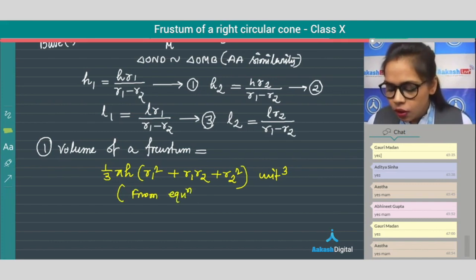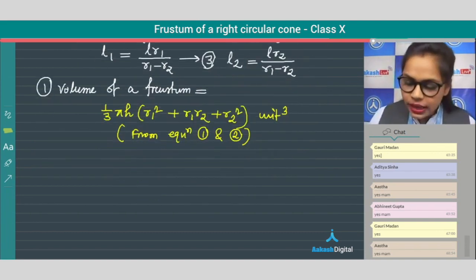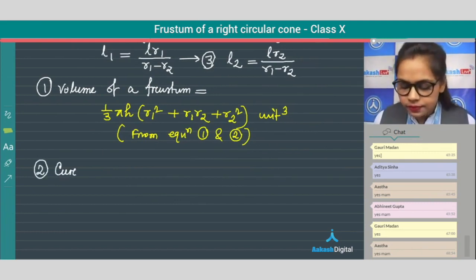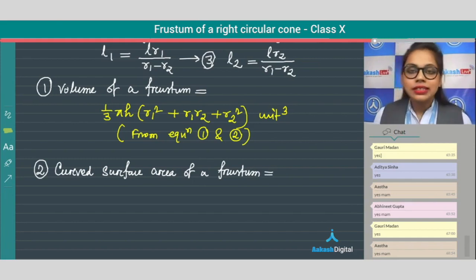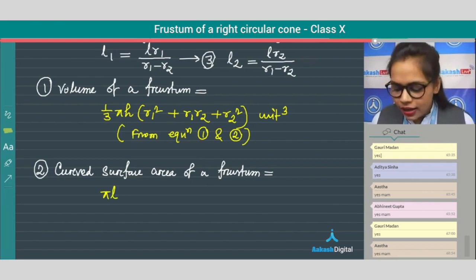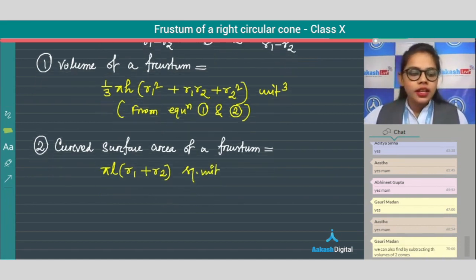Now let's move further for the second formula, that is curved surface area of a frustum. The formula is pi l in a bracket r1 plus r2 square unit.